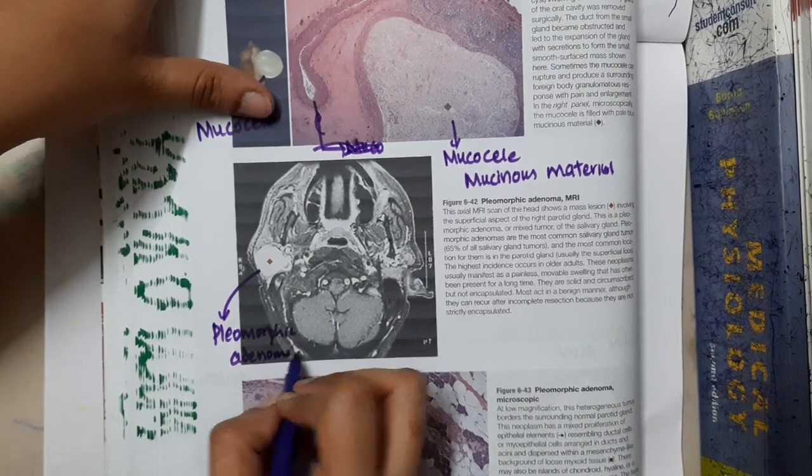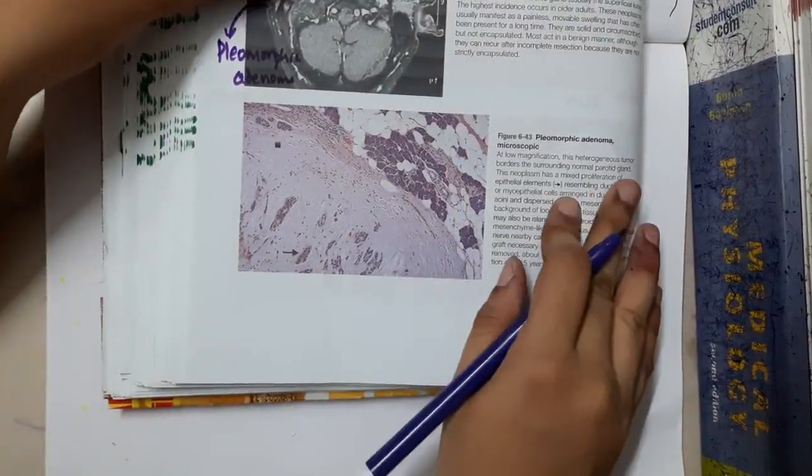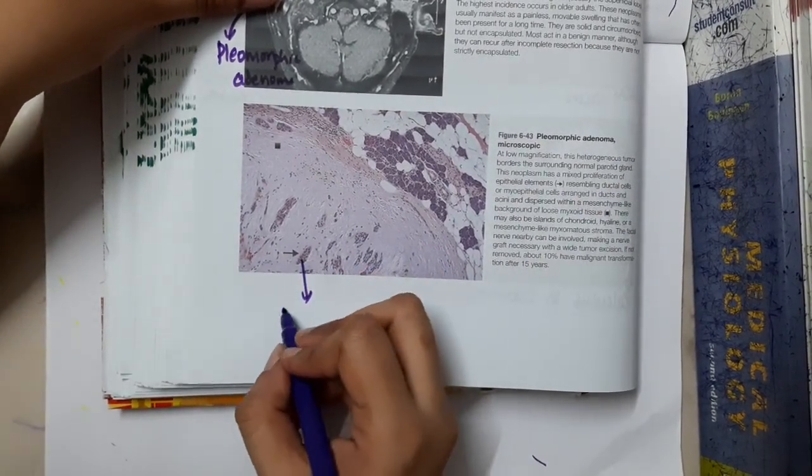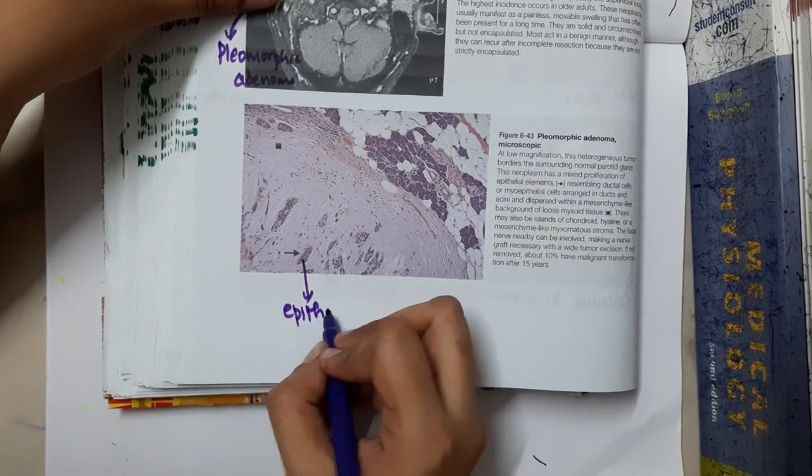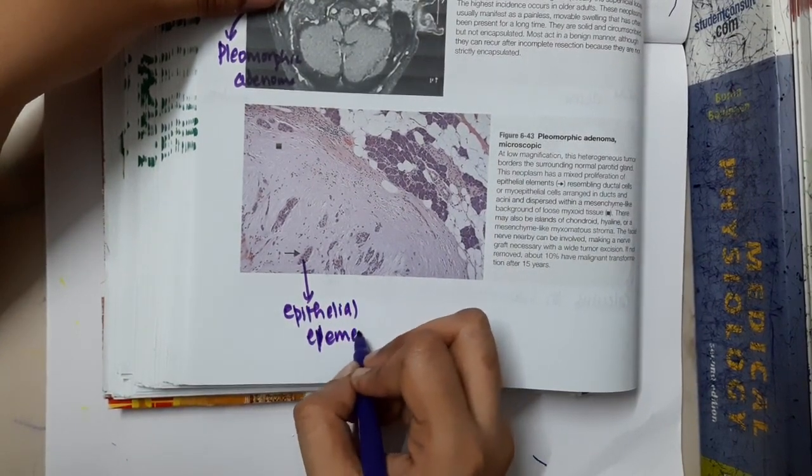In the parotid gland, if you see, this is the microscopic picture showing pleomorphic adenoma where you will see presence of epithelial elements. These epithelial elements are present here and are clearly seen.